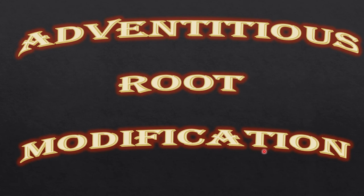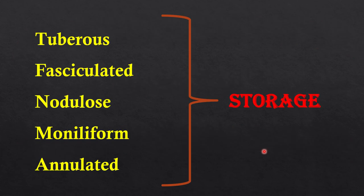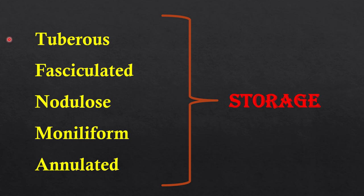Moving on to adventitious root modification. We will start with storage function. Why do we store something? We store valuables and important things for future use, and plants also do the same. There are five different types of storage roots: tuberous, fasciculated, nodulose, moniliform, and annulated.